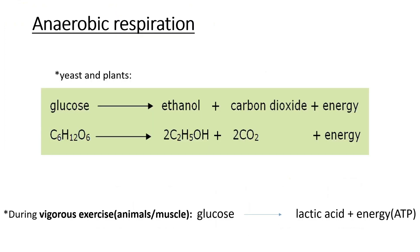Next is anaerobic respiration, which can happen in yeast and muscles. For yeast, glucose is the reactant and it gives you ethanol plus carbon dioxide plus a little bit of energy. The formula is: C6H12O6 → 2C2H5OH + 2CO2 + ATP.